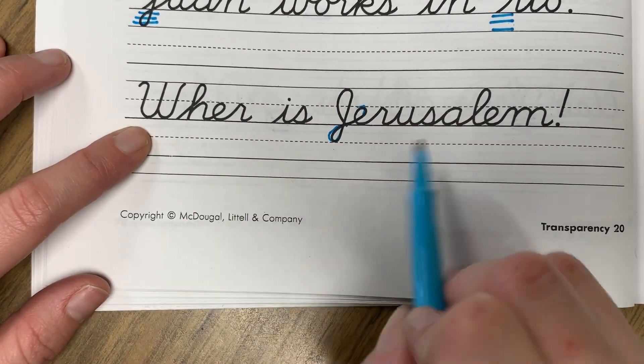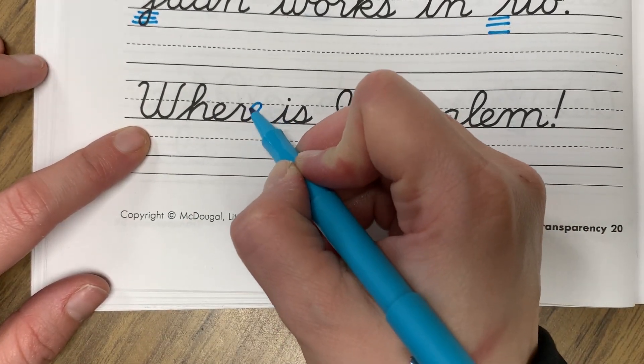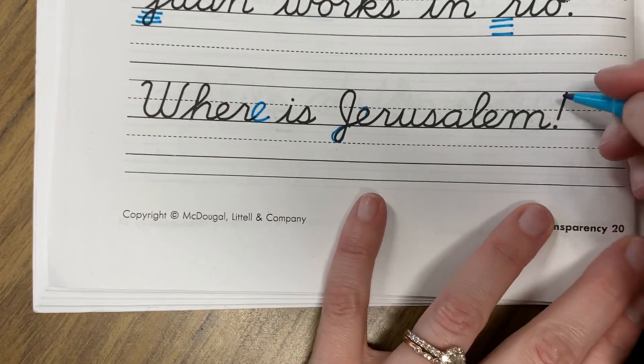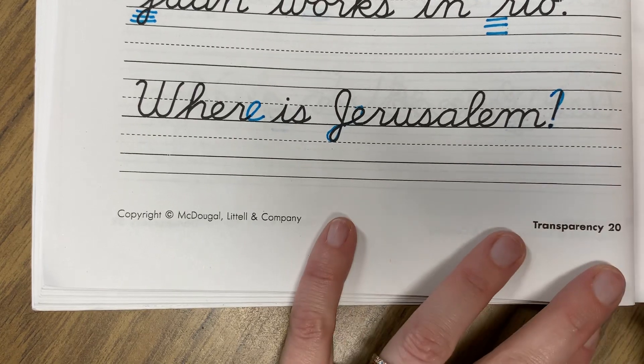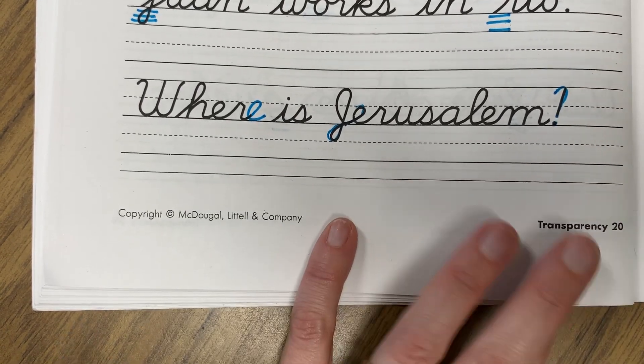This should say where is Jerusalem? Well, we need an E at the end. So where is Jerusalem is a question, so instead of an exclamation point, I need a question mark and I need an E at the end of where.